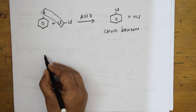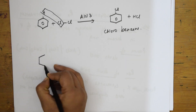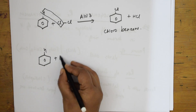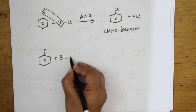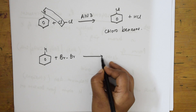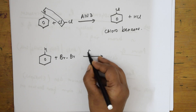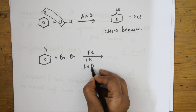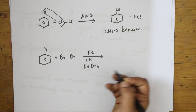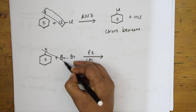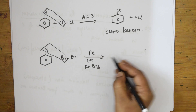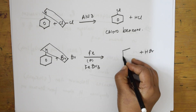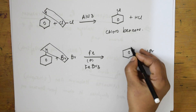Now if I take bromine instead — X = Br — I add bromine to benzene in the presence of FeBr3 as the Lewis acid. HBr is released as the leaving group and you get bromobenzene.